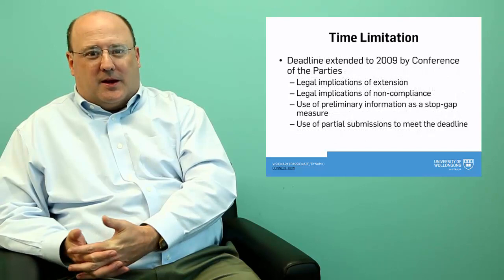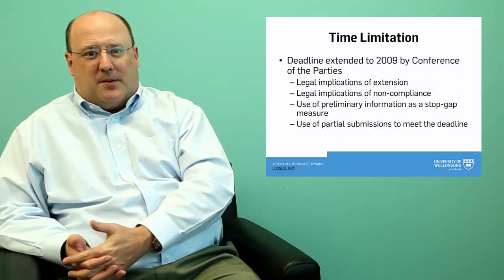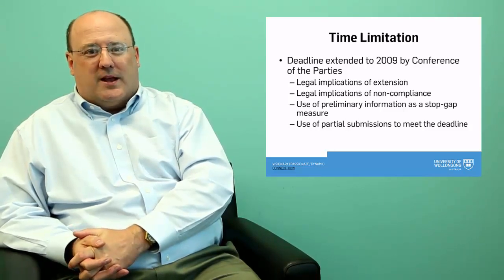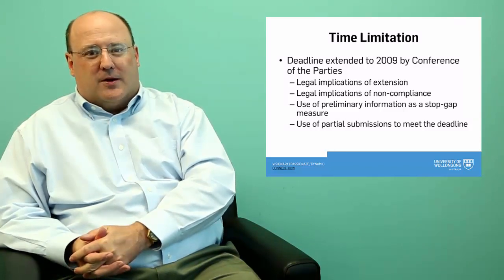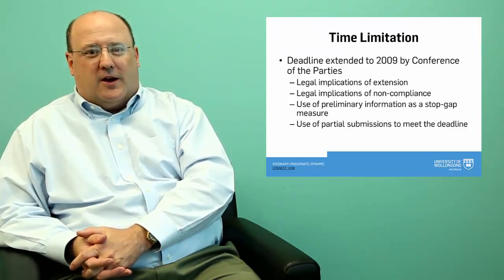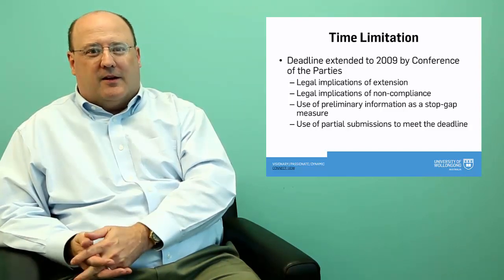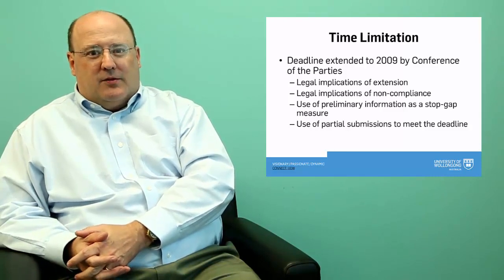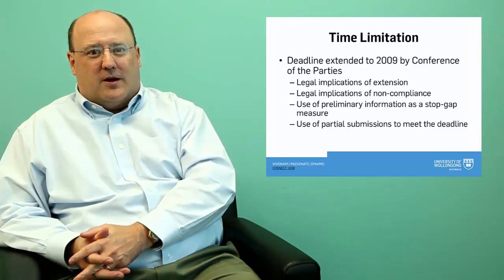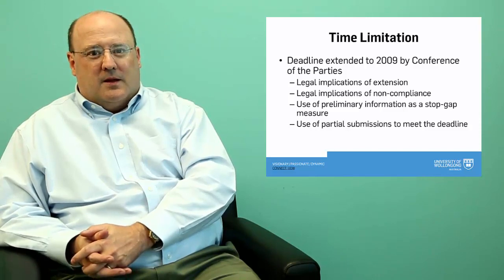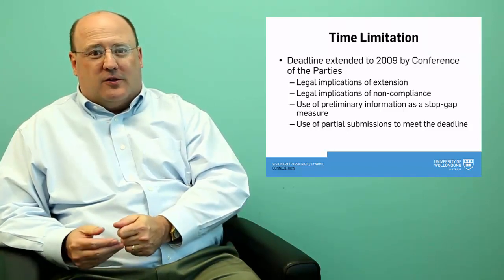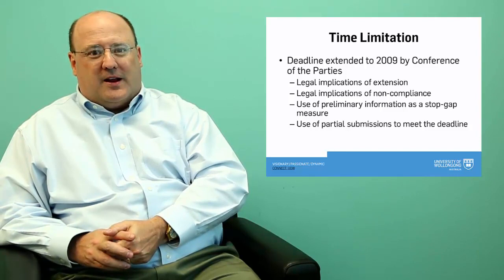Over time states began to realize that the 10-year deadline was not going to be possible. An extension was made and the implications of this extension within the Convention are perhaps open to some discussion. What was initially decided was that the 10-year deadline wouldn't begin with the entry of the Convention into force for many states on the 16th of November 1994, but rather would commence in May 1999 when the Commission finally concluded its rules of procedure making it clear as to how a state should submit its data. Even this extension however was going to prove problematic because for some states even 2009 was going to be an impossible deadline to meet. This raised the issue of what happens if a state doesn't comply with its deadline. It wasn't clear whether a state could continue to assert an extended continental shelf and this vexed the state parties considerably.